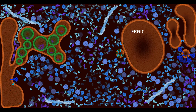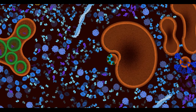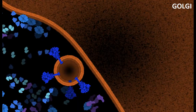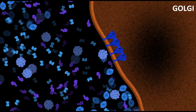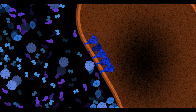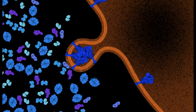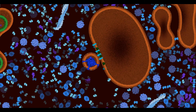The E and M proteins are transported to the ER-Golgi intermediate compartment, ERGIC, which lies between the Golgi and the ER. The S proteins will take another route and are transported to the Golgi, where they are glycosylated and mature. Once post-translational modifications have occurred, the S proteins are also transported to the ERGIC.